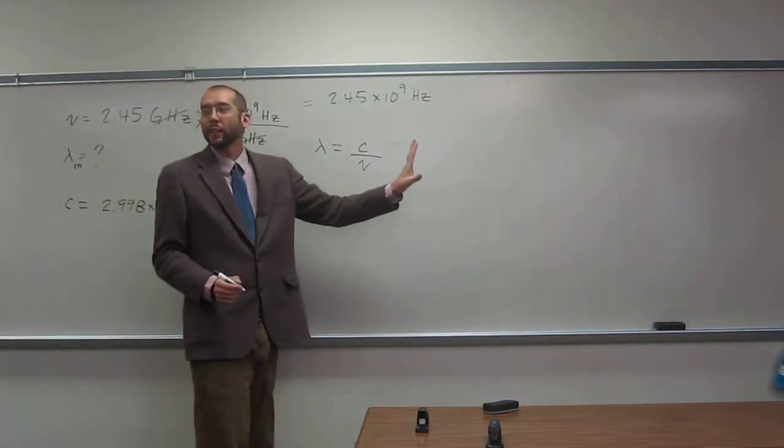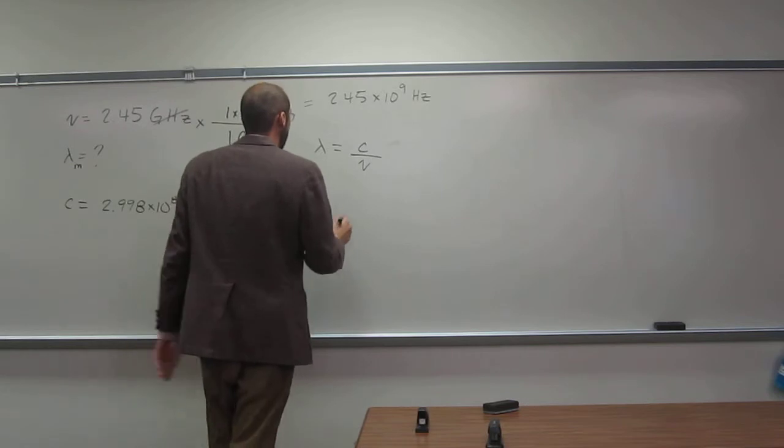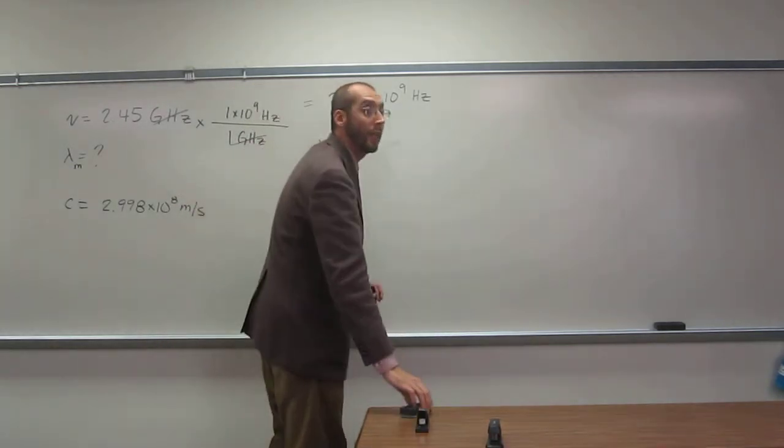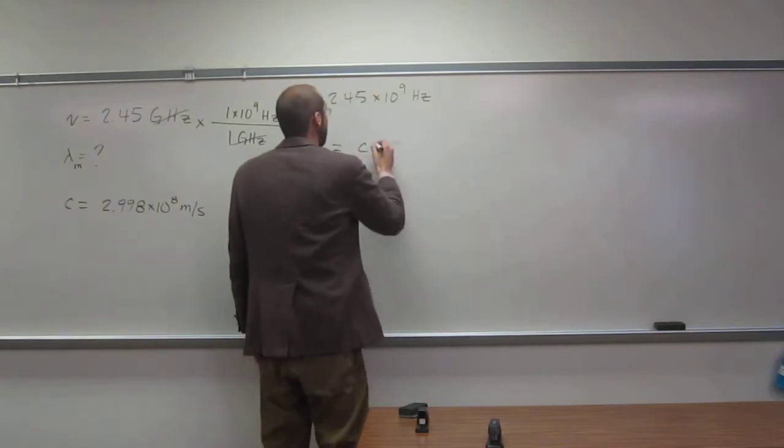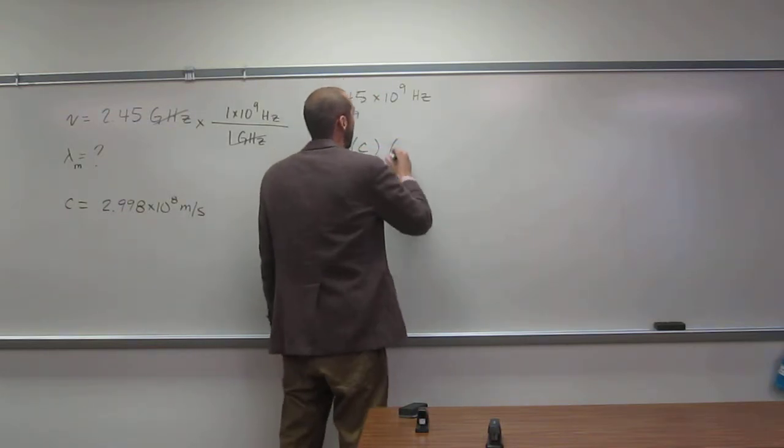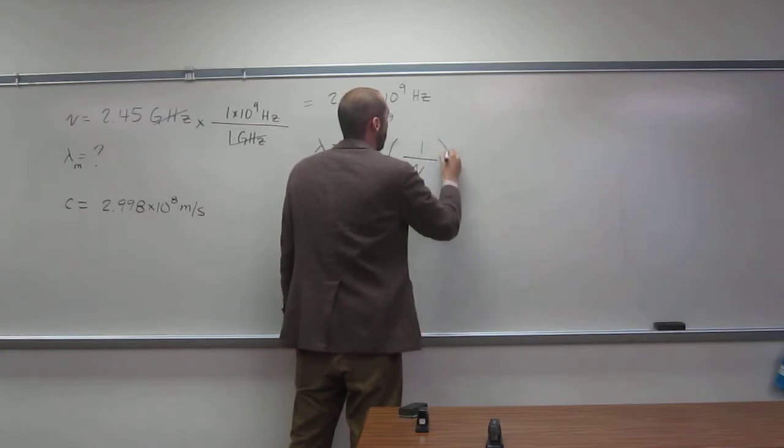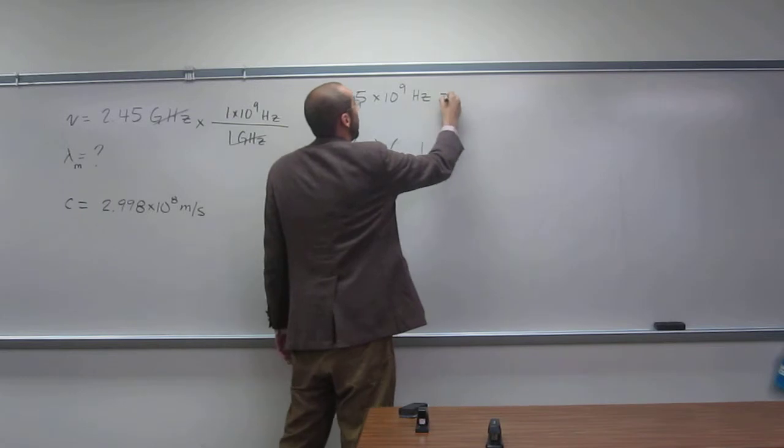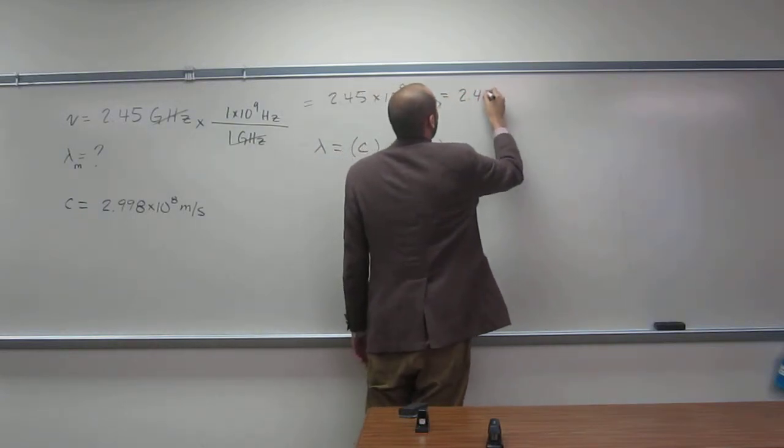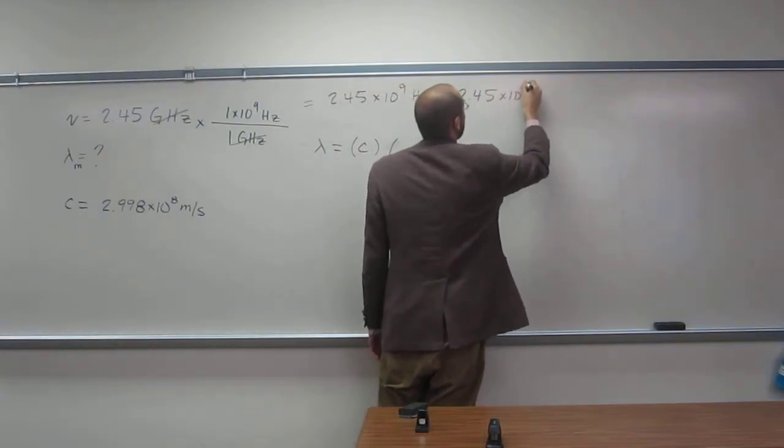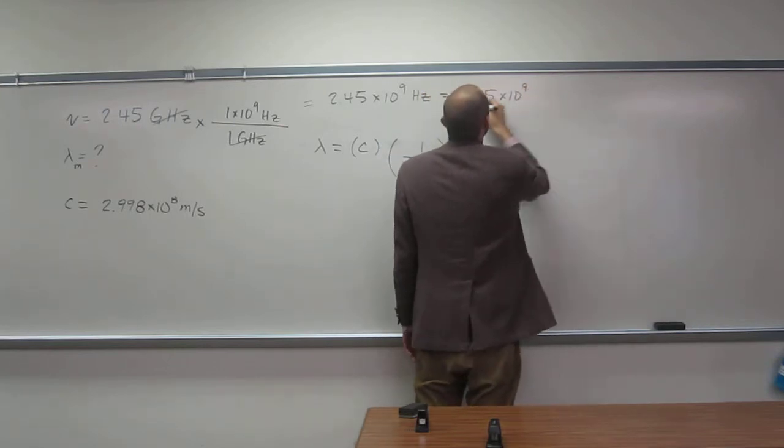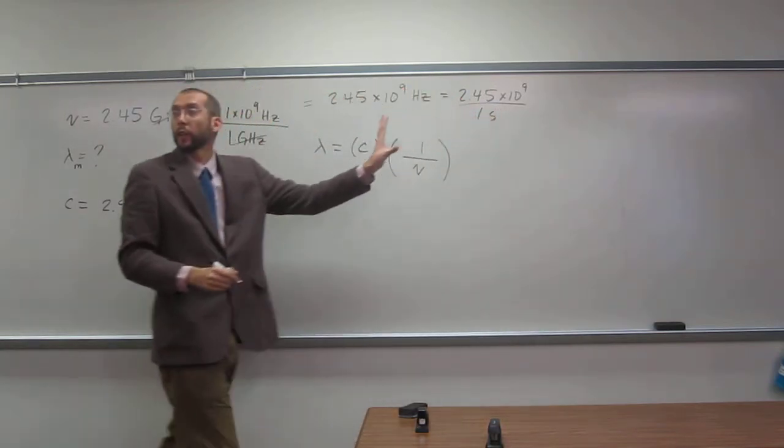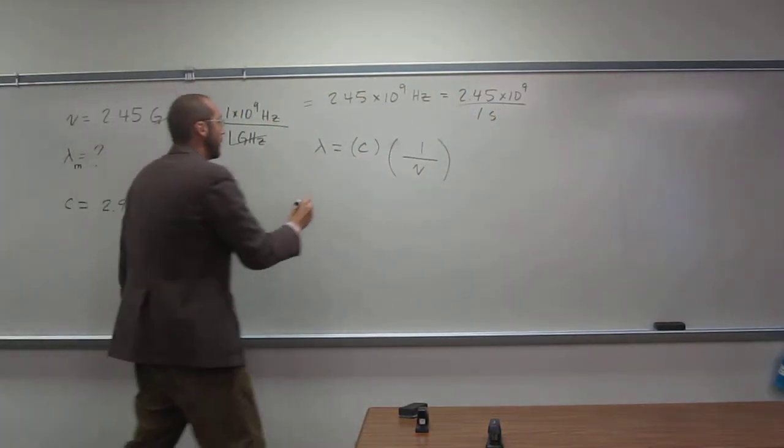So again, I like to cancel out units. So let's rearrange this equation in such a way so it'll be easy for us to cancel out our units. So we'll say C times 1 over nu, okay? So remember, hertz here, another way to write that is 2.45 times 10 to the 9th per one second, right? Something like that.